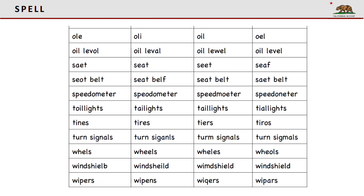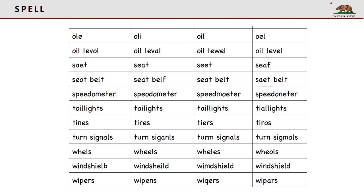Seat. Seat belt. Speedometer. Tail lights. Tires. Turn signals. Wheels. Windshield. Wipers.